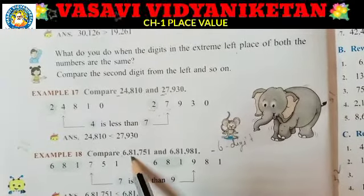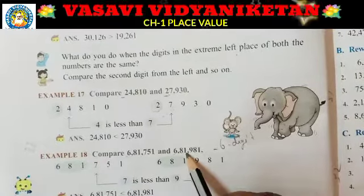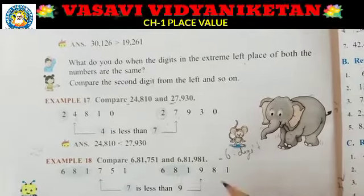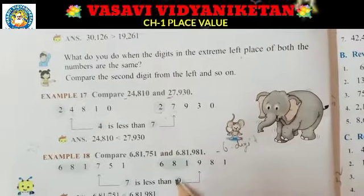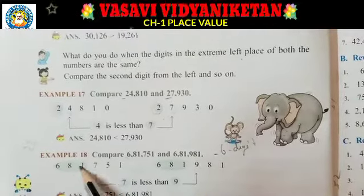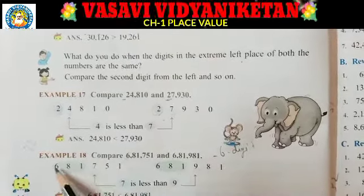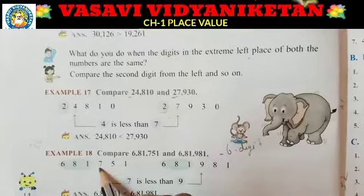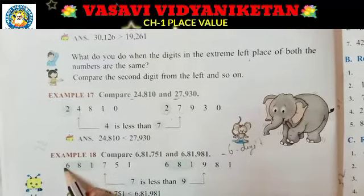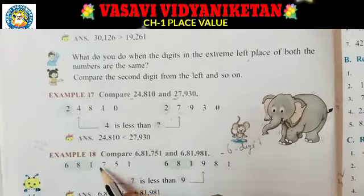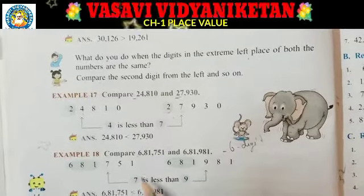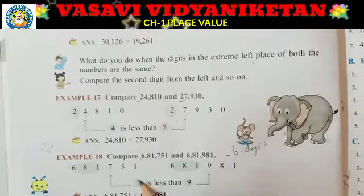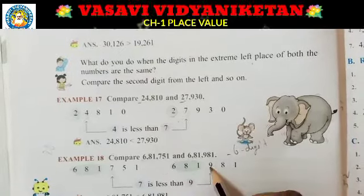Starting from the left, both numbers begin with 6,81 — so the first 3 digits are the same. Here 3 places are the same. Now what do you do? We compare the next place. Here we have 681 and 681 — 3 digits are the same. So we compare the 4th digit. In the 4th digit, which number is there? 7 is there. Here in the 4th place, which digit is there? 9 is there.